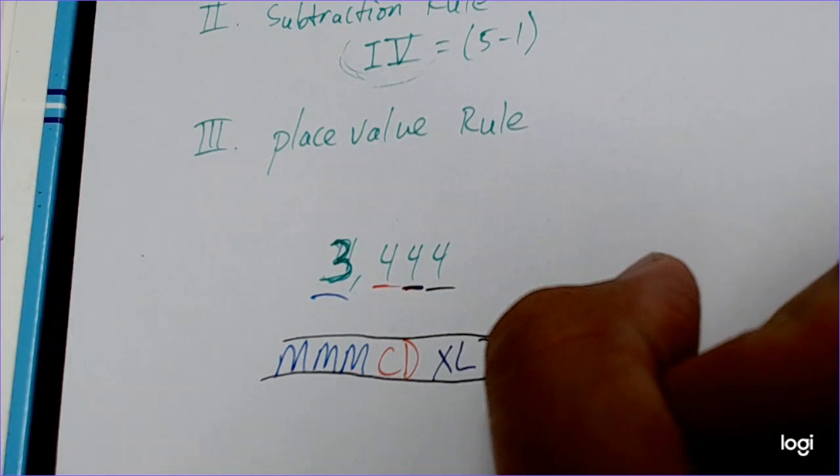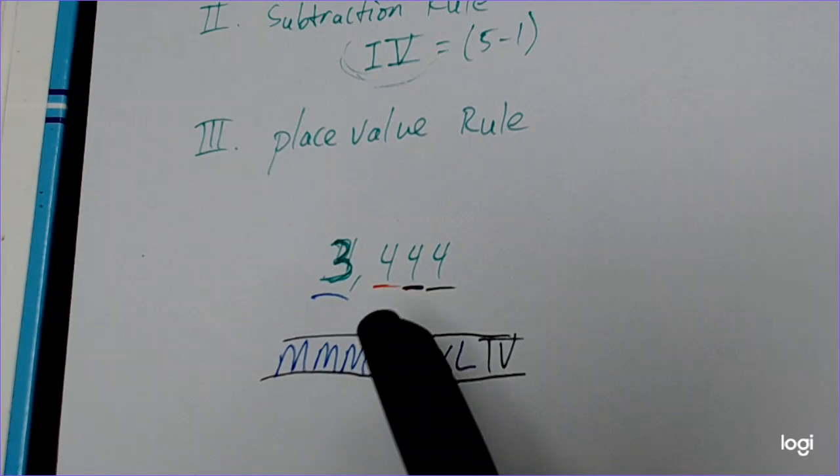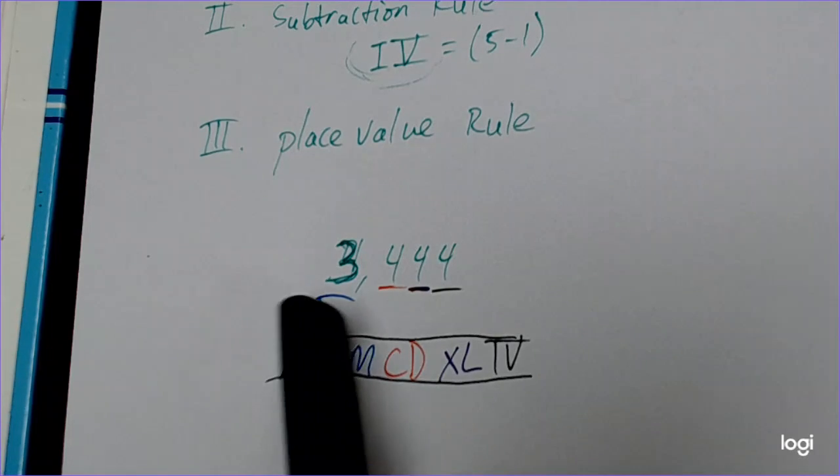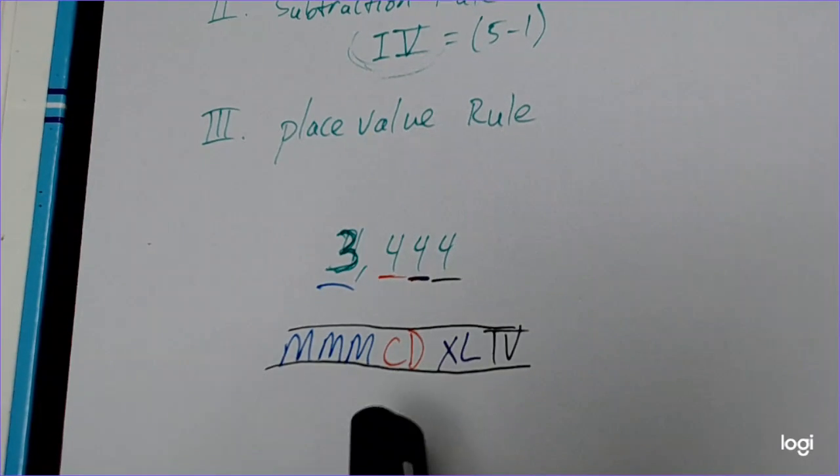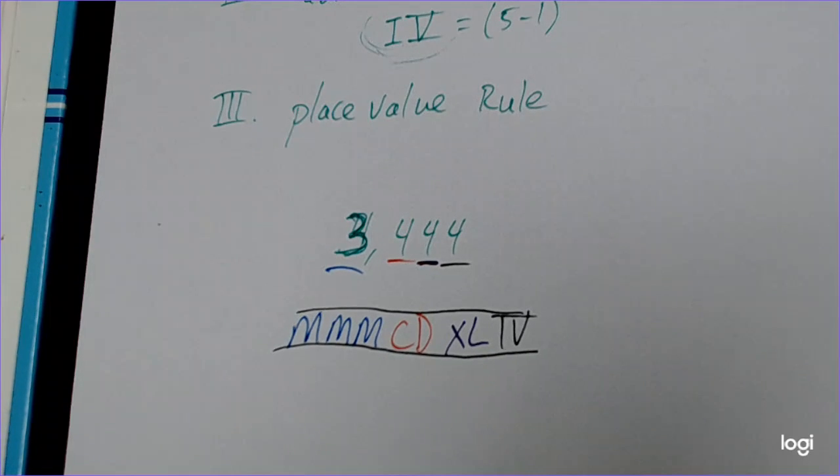And technically, we're supposed to have those bars above and below everything. That's how we would write large Roman numeral numbers. We use place value. It's very helpful if you have to write large Roman numerals. Write it in Arabic numerals the way that you understand it, and do it one number at a time by place value. That's the place value rule.